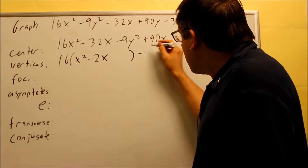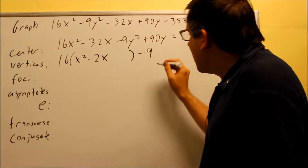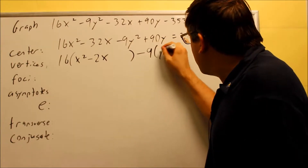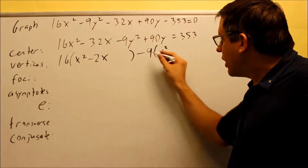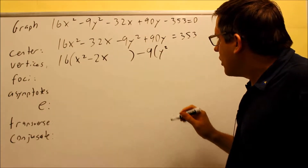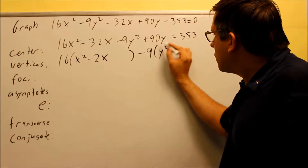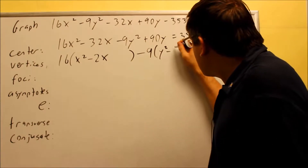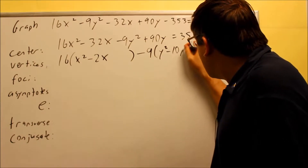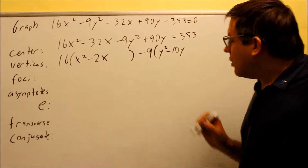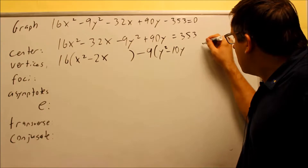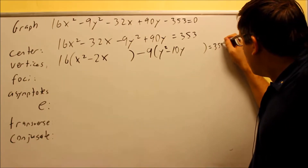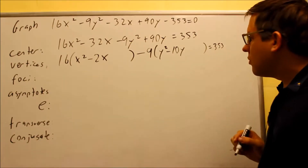For the next group, we want to pull out a negative because we want y squared to be positive, so we pull out minus 9. When we pull that out, we have positive 90y — taking out a negative 9 changes this to a negative, so you get negative 10y inside. We leave a space there as well, and we have 353 on the right side.